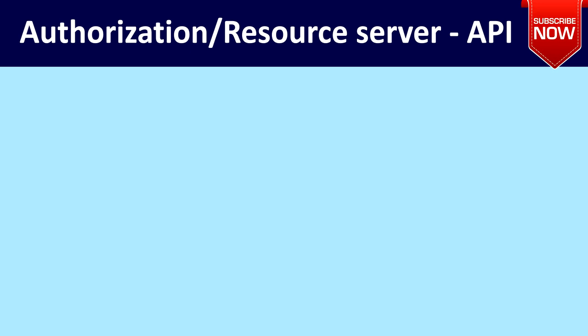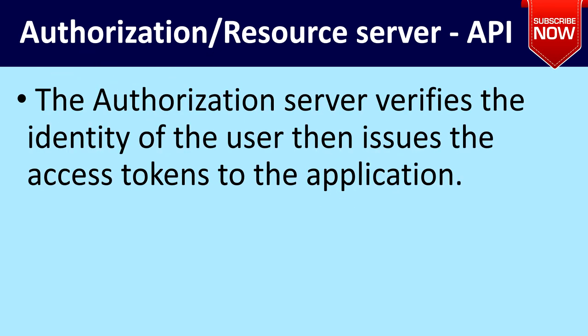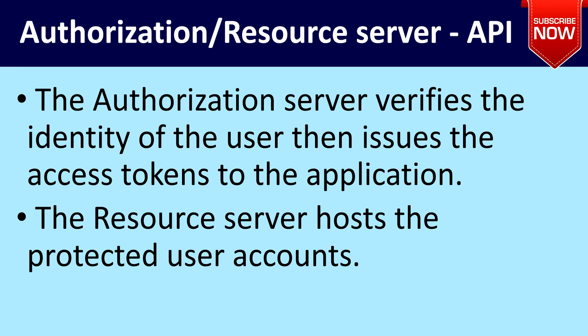Next, the authorization server and resource server — basically, both are an API. The authorization server verifies the identity of the user and then issues access tokens to the application. You need to provide the username, password, client ID, and client secret to the authorization server. Once those credentials are valid, the authorization server will provide you an access token and refresh token to access the resource server APIs. The resource server hosts the protected user accounts. Once you get the token from the authorization server, you send it to the resource server to access the user account details.